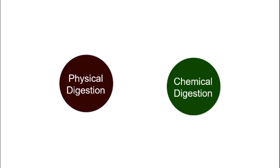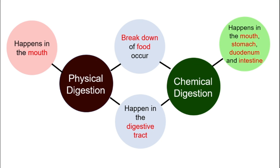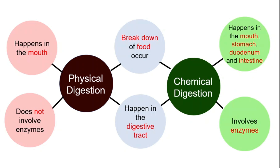Let's compare physical digestion and chemical digestion. Both of them break down food, and both happen in the digestive tract. Physical digestion happens in the mouth, whereas chemical digestion happens everywhere — in the mouth, in the stomach, in the duodenum, and also in the intestine. Physical digestion does not involve enzymes because it is physical, not chemical. Chemical digestion involves enzymes. There are many new words here — you will understand them better as you watch this video.